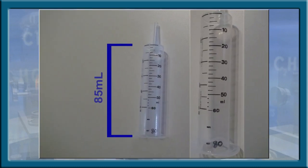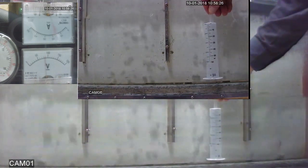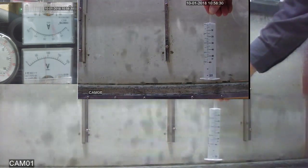This syringe has a total volume of 85 milliliters from end to end. Holding this syringe up to the bubbler gives an idea of what just 92 milliliters of hydrogen looks like.